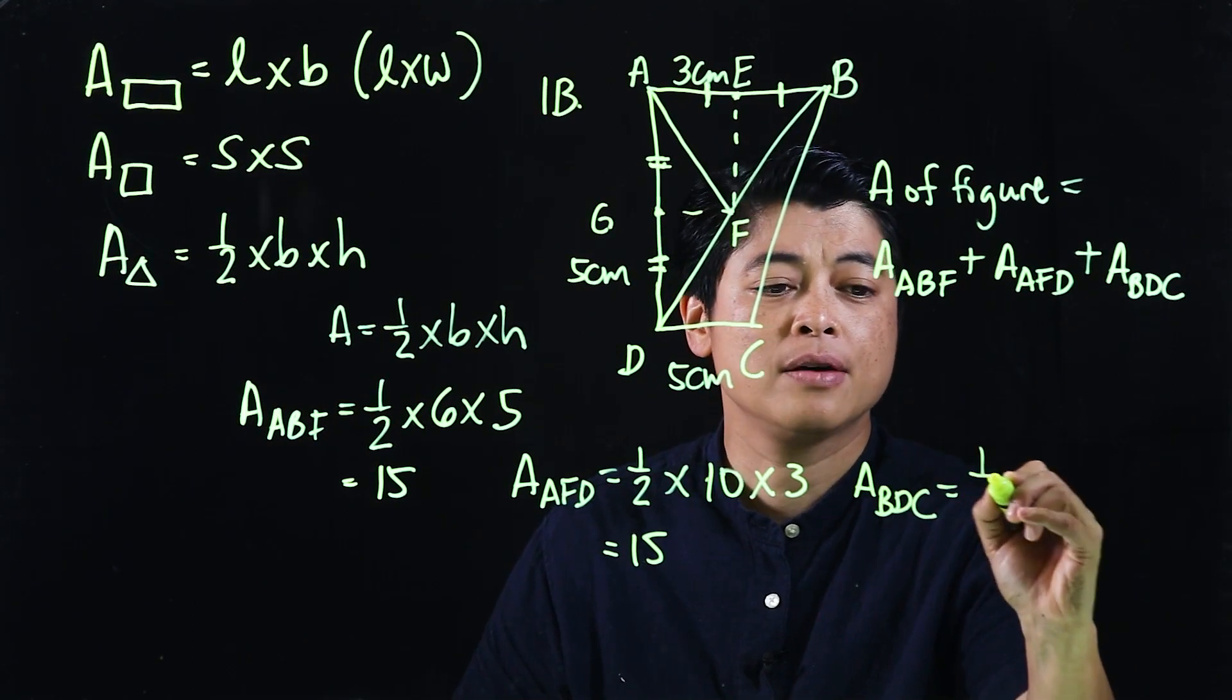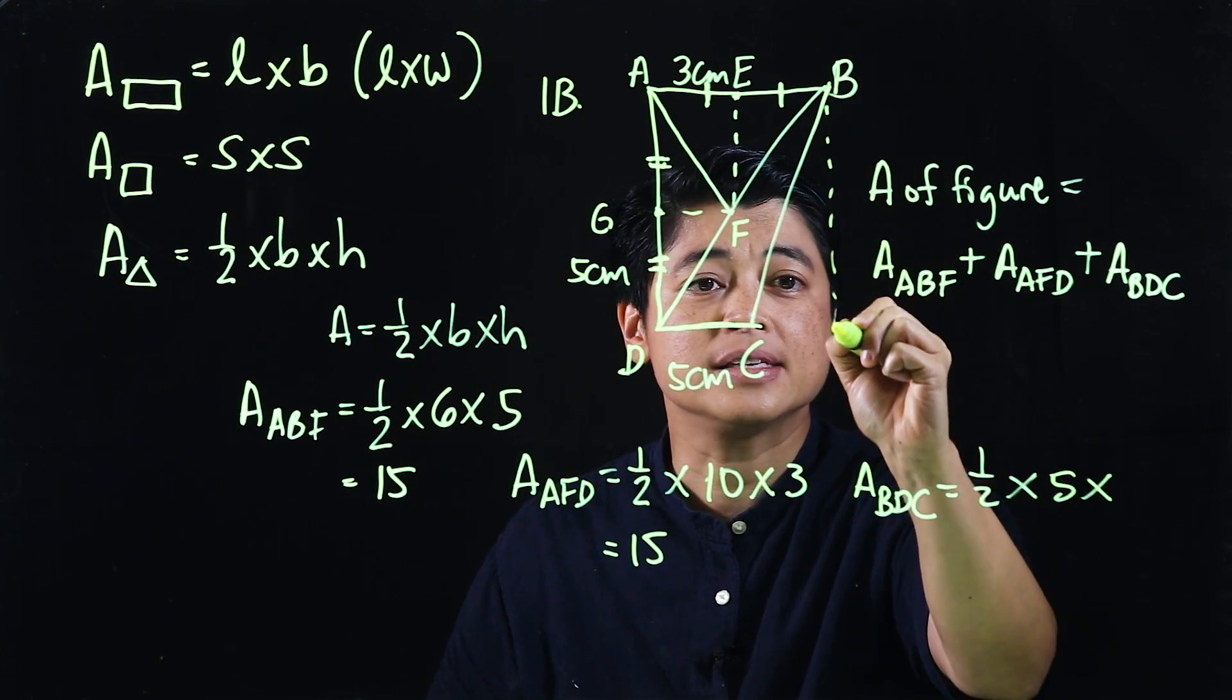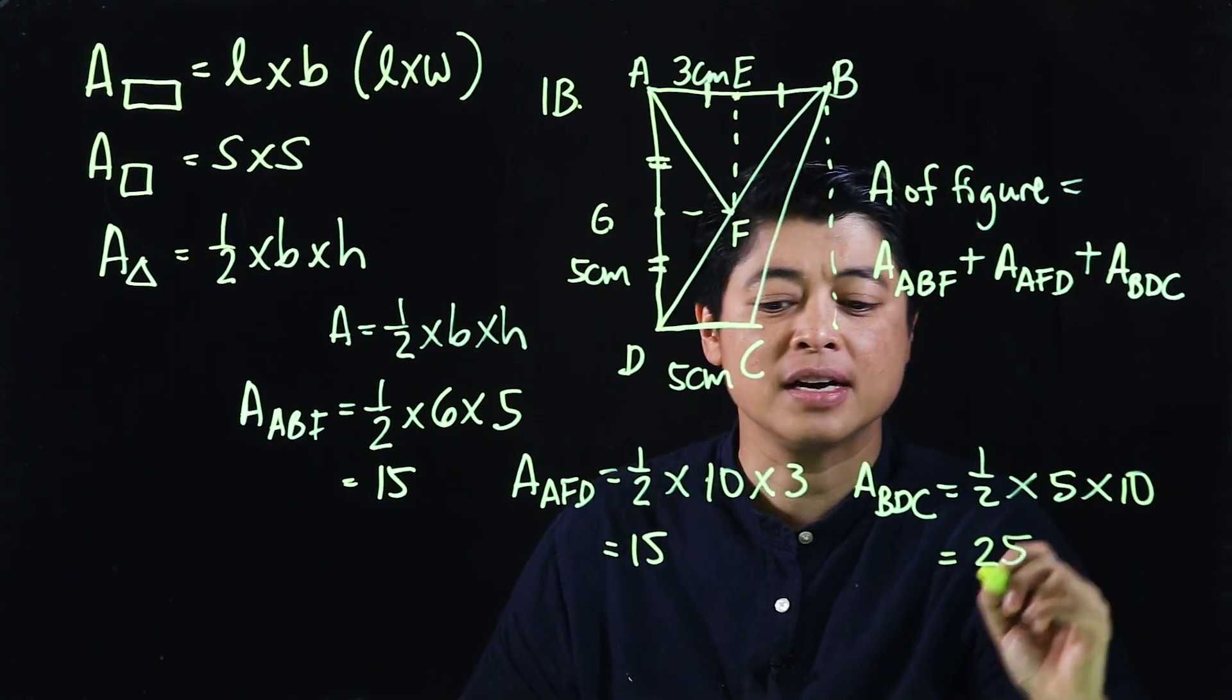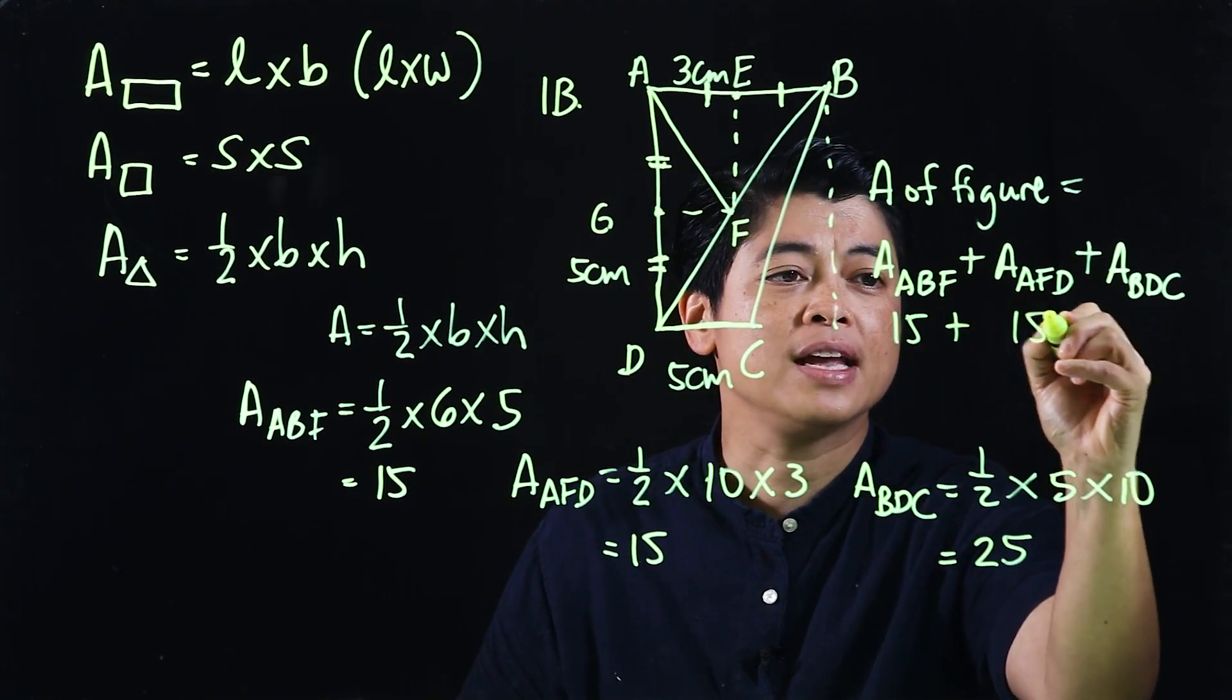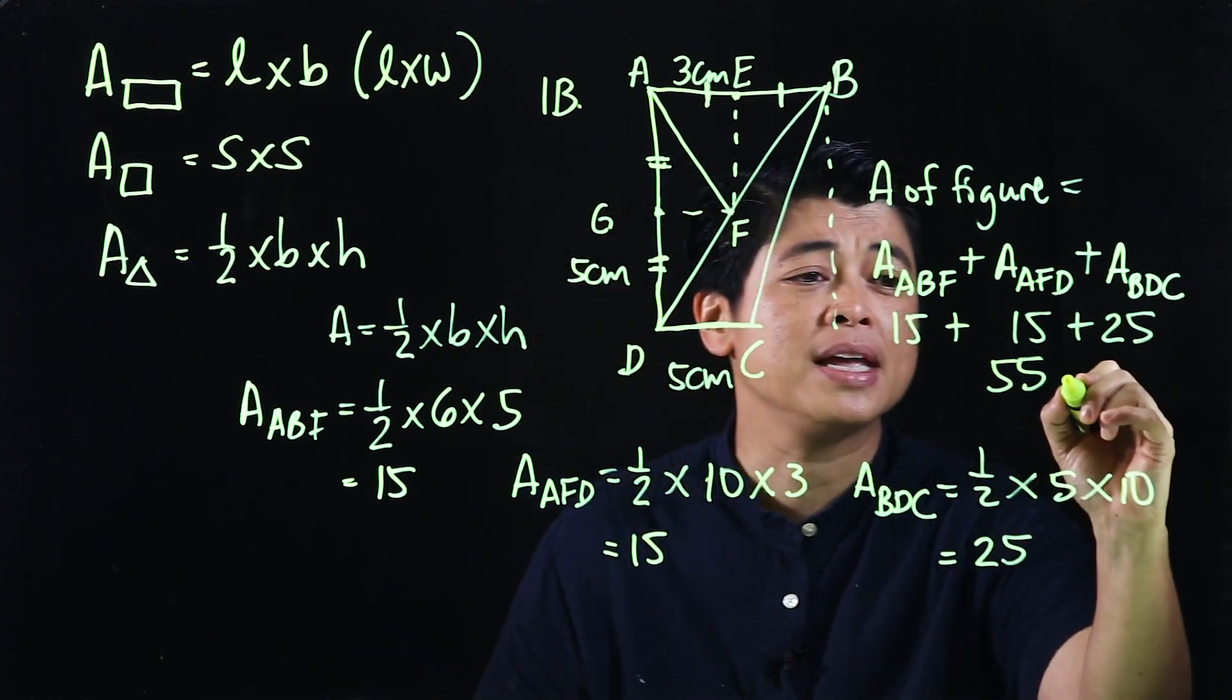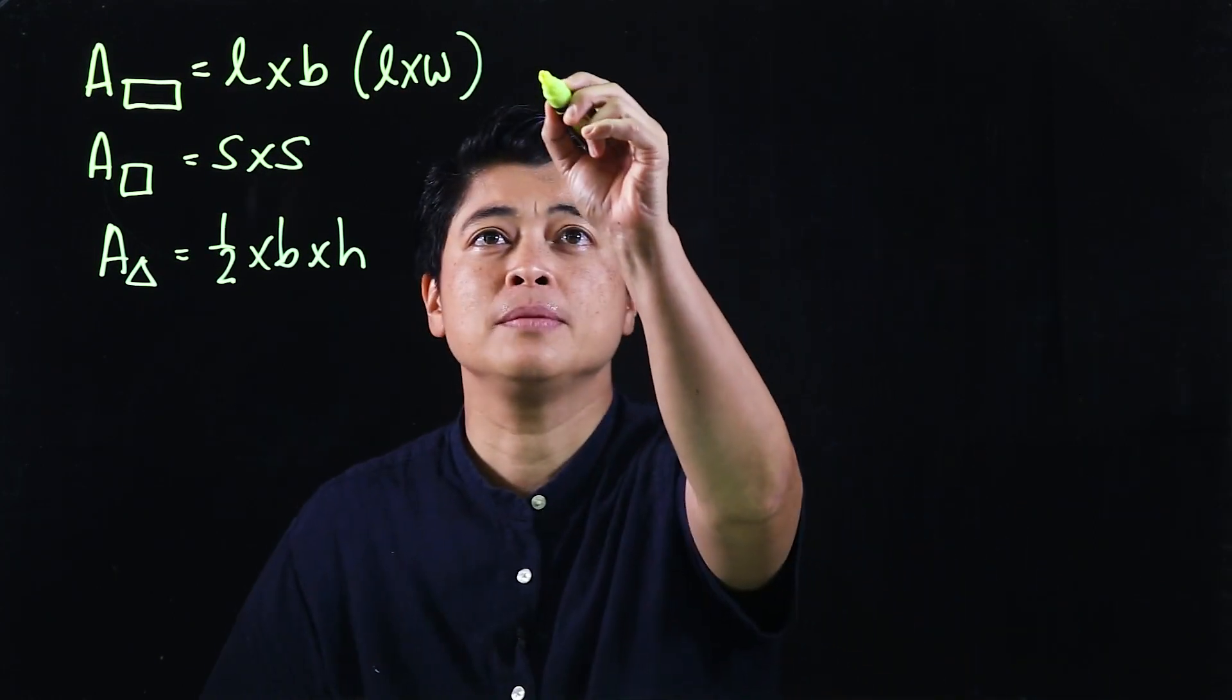Finding the last area, area of BDC, will be one-half base, which is 5, and the height will technically be this, and that height is the same as that which is 10. If we multiply that would give us 25. If we take 15 and 15 and 25, that's 30 plus 25 is 55, and since this is area this will be centimeters squared.